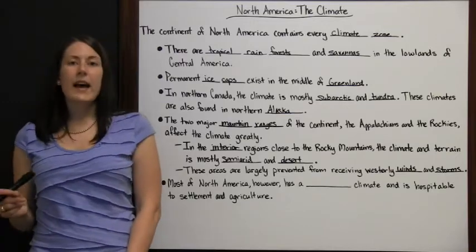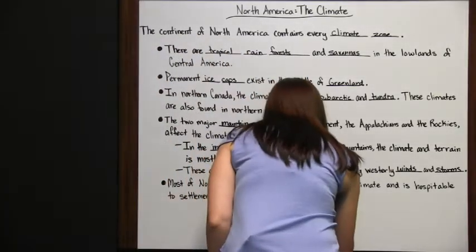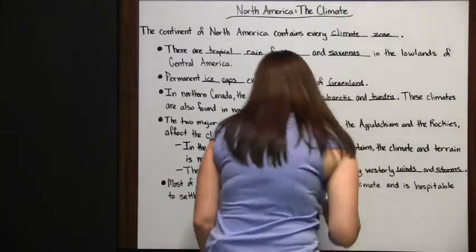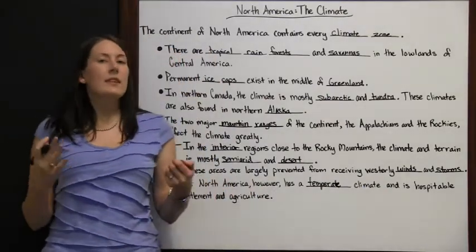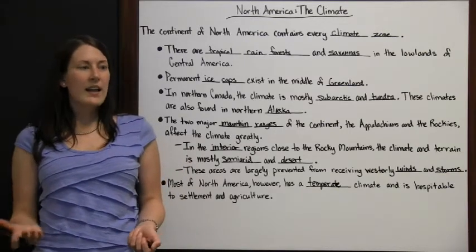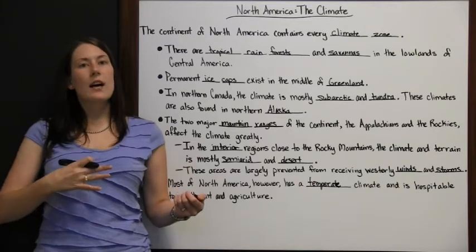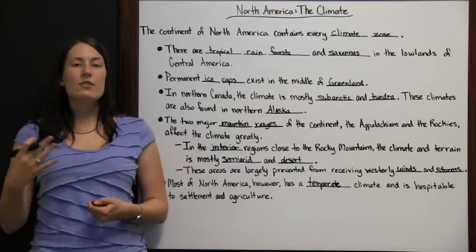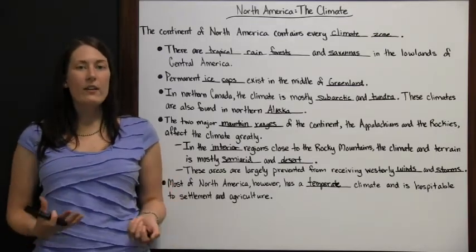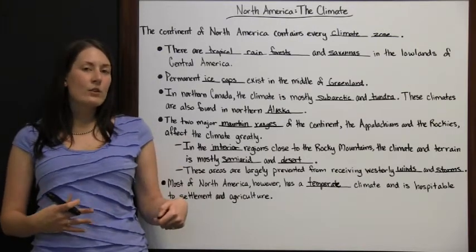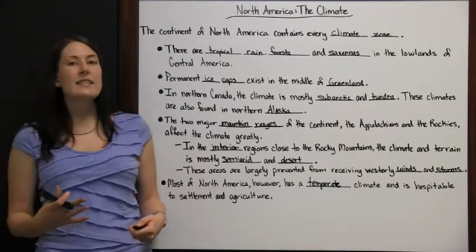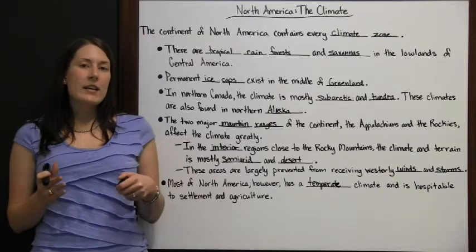However, most of North America has a temperate climate and is hospitable to settlement and agriculture. Temperate means it's tempered — in the middle, not too hot, not too cold, not too wet, not too dry. A lot of the land gets a cold season but also a warm season. Things are able to grow in cycles, getting plenty of moisture so they grow well when it's warm. During the colder seasons things die off, but they come back once it warms up again. Most of North America has this temperate climate where everything is pretty mild.